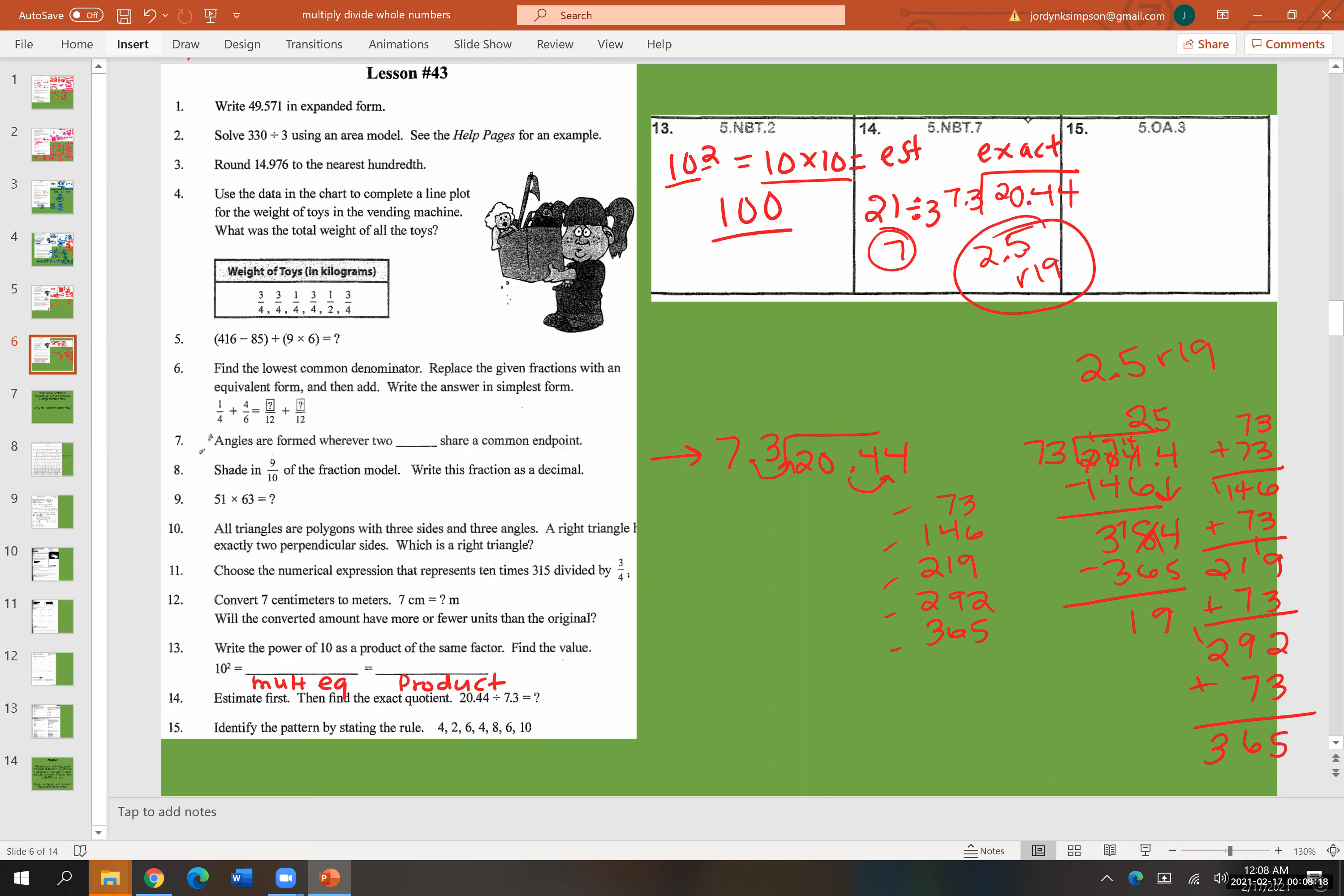So number 15, identify the pattern by stating the rule. We went from 4 to 2 to 6 to 4 to 8 to 6 to 10. So that one's real wonky. So to get from 4 to 8, add 4. So then 8 to 6, subtract 2. 6 to 10, add the 4. So it would be subtract 2, add 4. And I want you to write that out. You can put sub 2, add 4. All right. Good job.